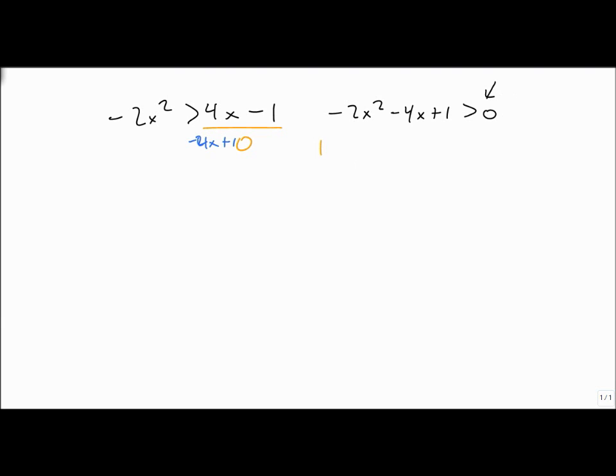So we still start the same way. H is minus b over 2a, so we get minus a minus 4 over 2 times a minus 2. This is going to stay negative, but 4 divided by 4 is 1, so h is minus 1. That means k is minus 2 times minus 1 squared, minus 4 times minus 1 plus 1. So that's minus 2 plus 4 plus 1, which is 3.